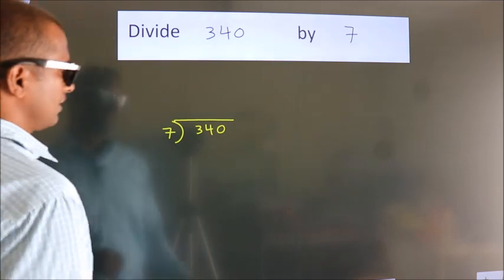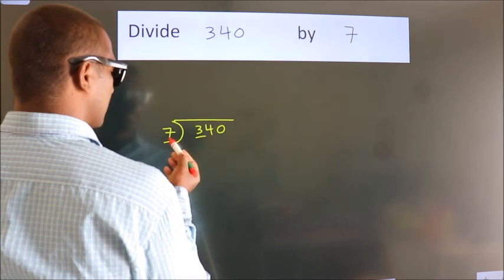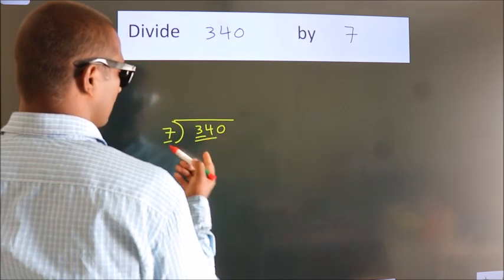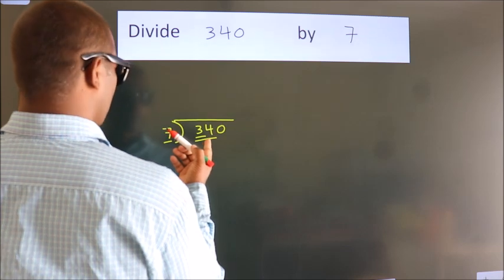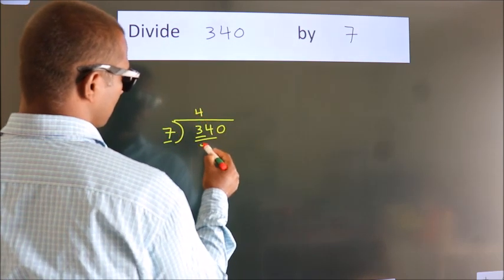Next, here we have 3. Here 7. 3 is smaller than 7, so we should take 2 numbers: 34. A number close to 34 in the 7 table is 7 fours, 28.